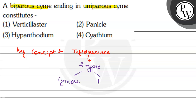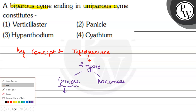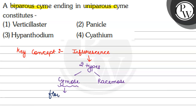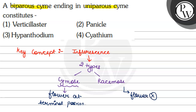The two types are cymose inflorescence and racemose inflorescence. In cymose inflorescence, the flower is present at the terminal position of the axis, so the growth is limited. And in racemose inflorescence, the axis continues to grow — meaning the flower is not present at the terminal position.